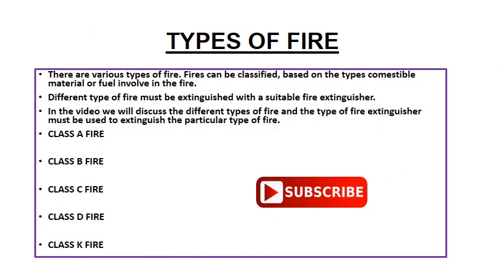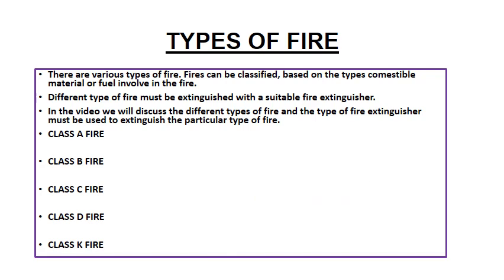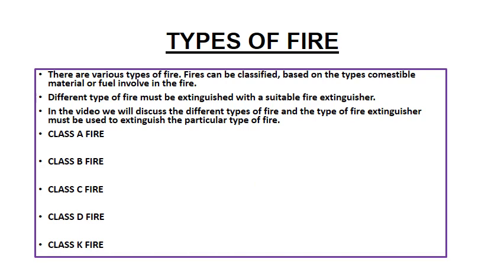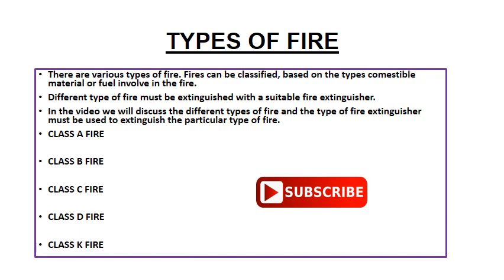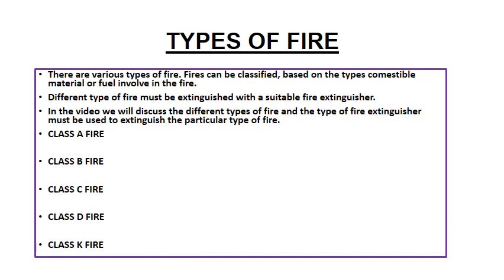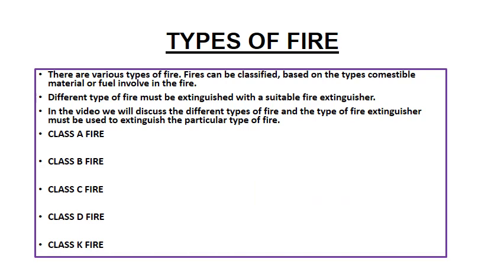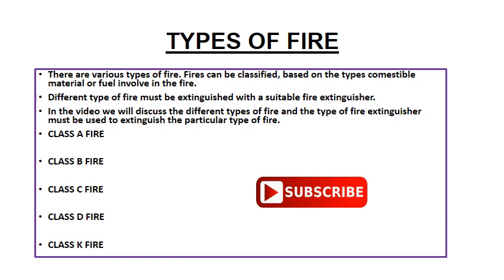There are various types of fire. The fires can be classified based on the types of combustible material or fuel involved in the fire. The different types of fire must be extinguished with a suitable fire extinguisher. We will discuss the different types of fire and the type of fire extinguisher that must be used to extinguish each particular type. The fires can be classified in the following categories: Class A fire, Class B fire, Class C fire, Class D fire, and Class K fire.